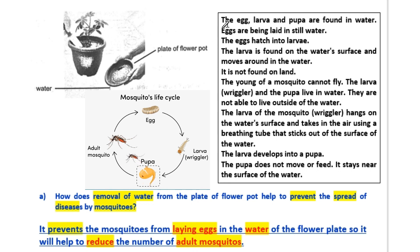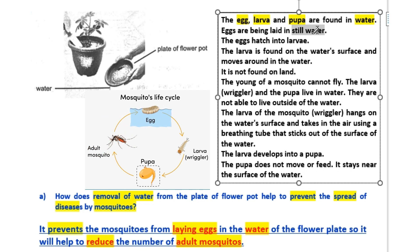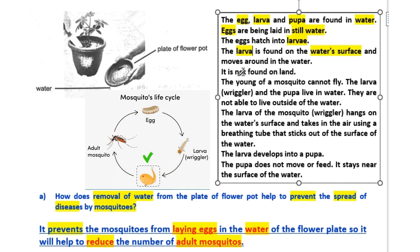The egg, larva, and pupa are found in water. Eggs are laid in still water. The eggs hatch into larvae. The larvae are found on the water's surface and move around in the water. They are not found on land.